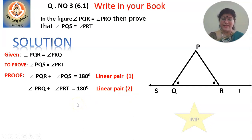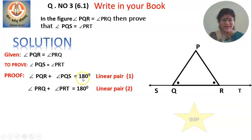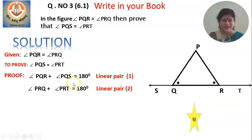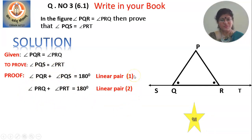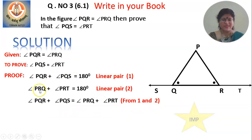Since the right-hand side of both equations is equal to 180, we equate the left-hand sides. So from statements 1 and 2: angle PQR plus angle PQS is equal to angle PRQ plus angle PRT.